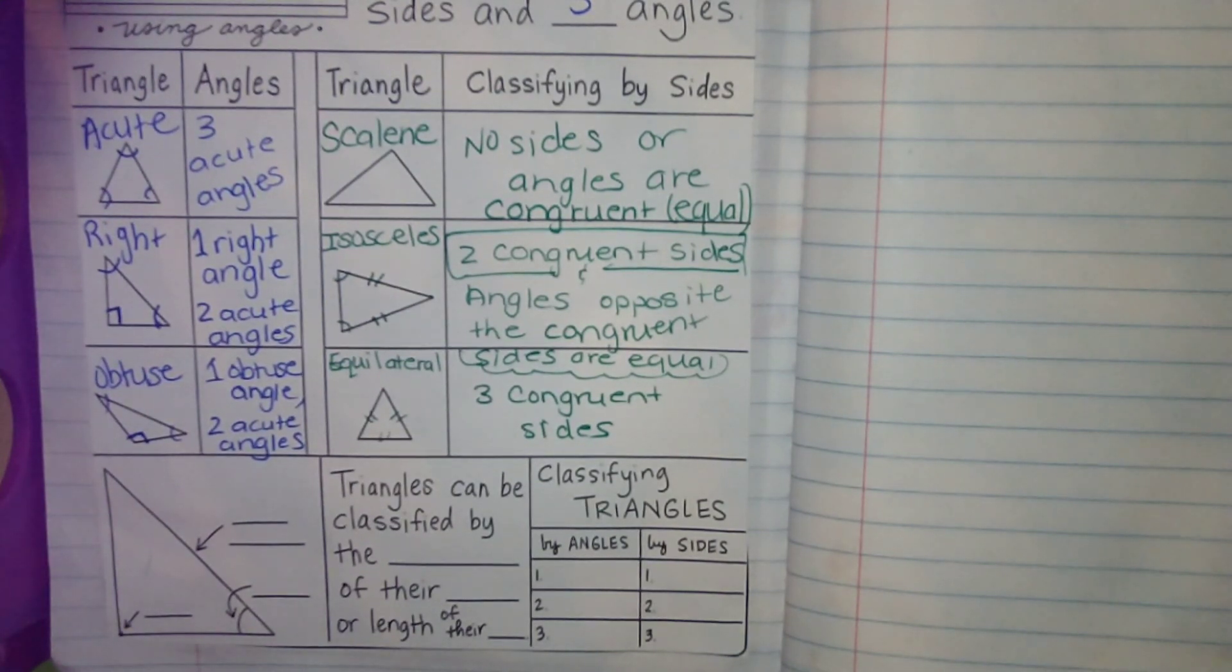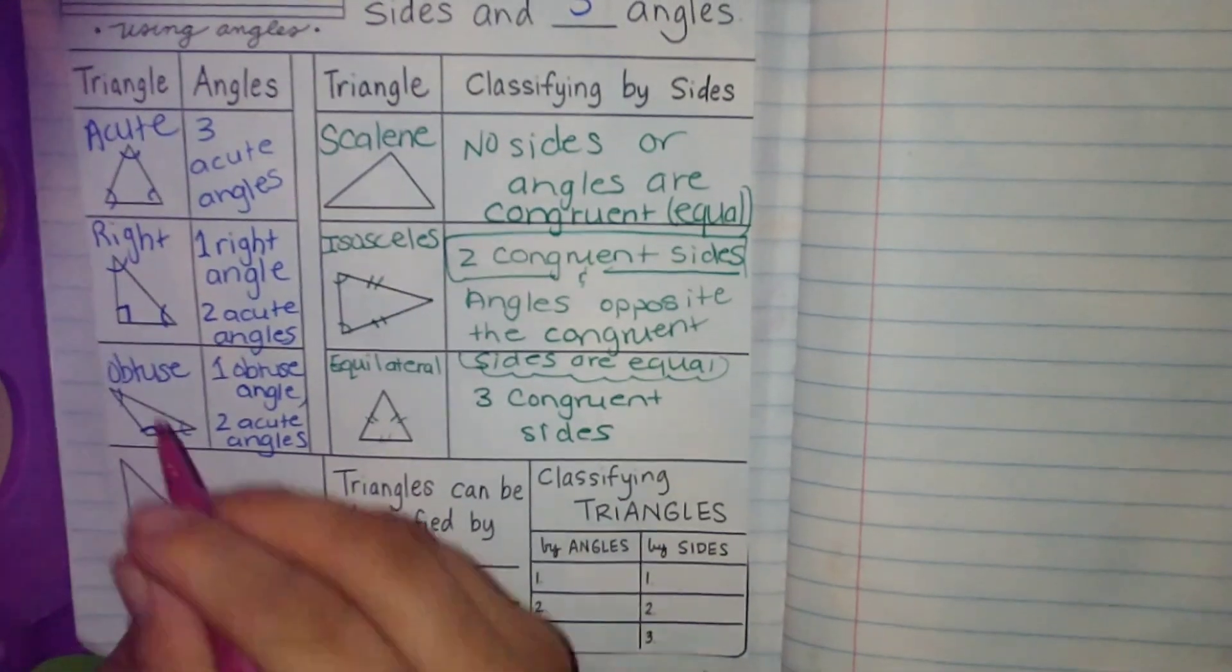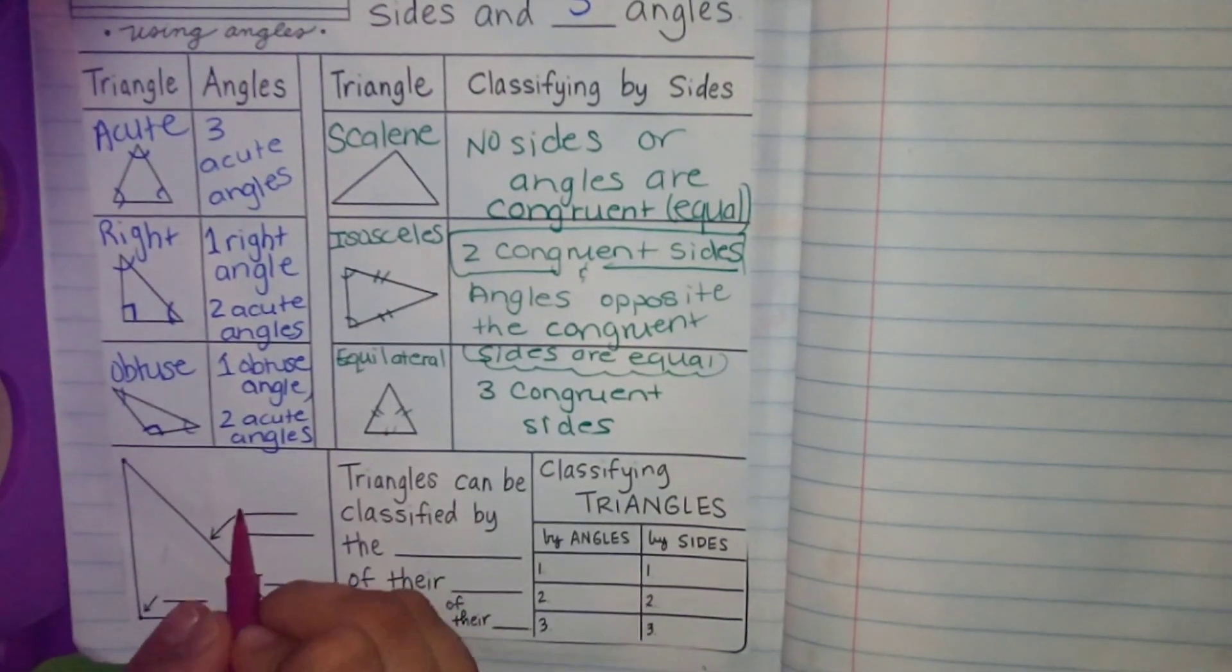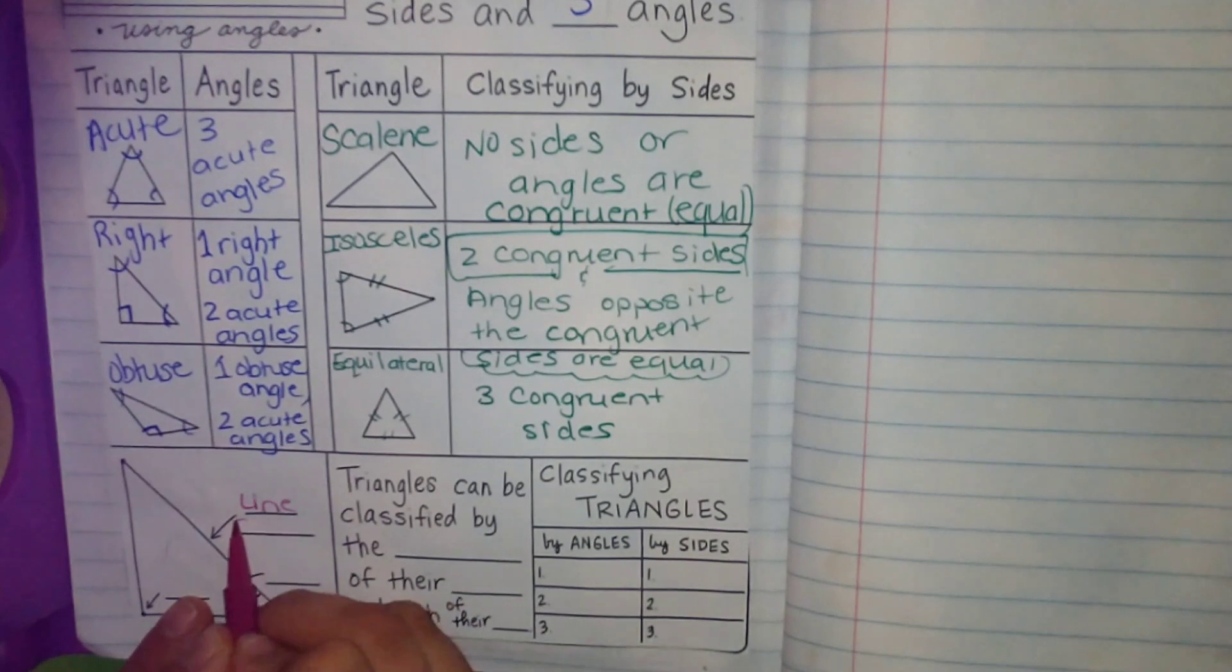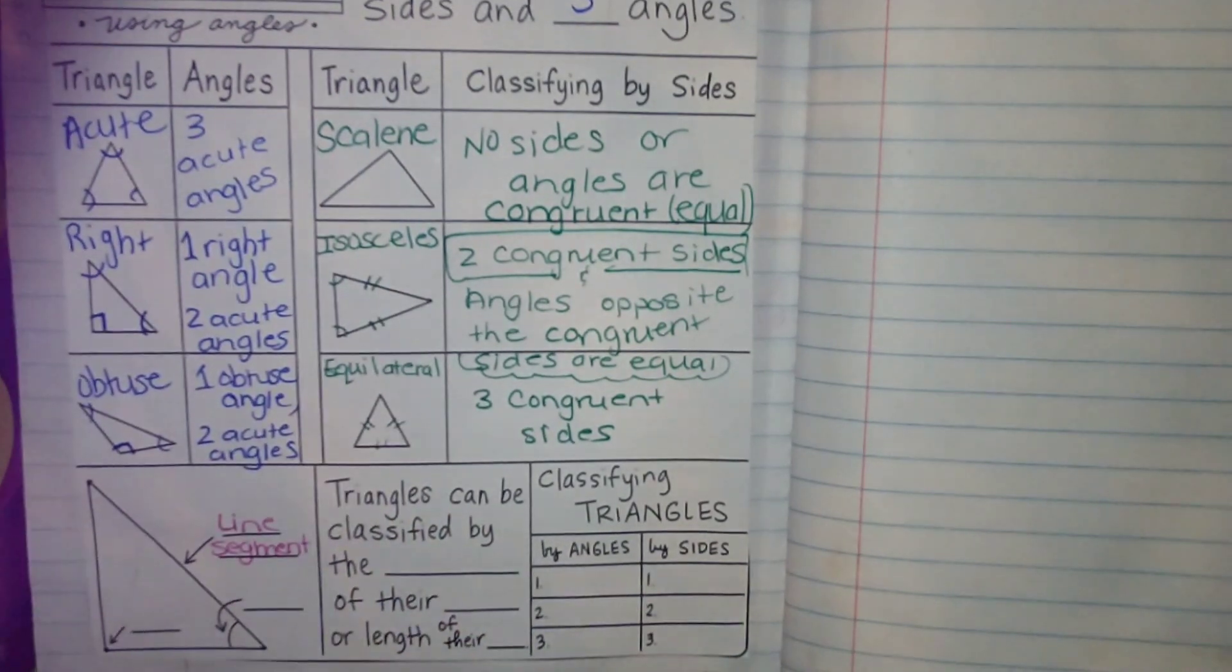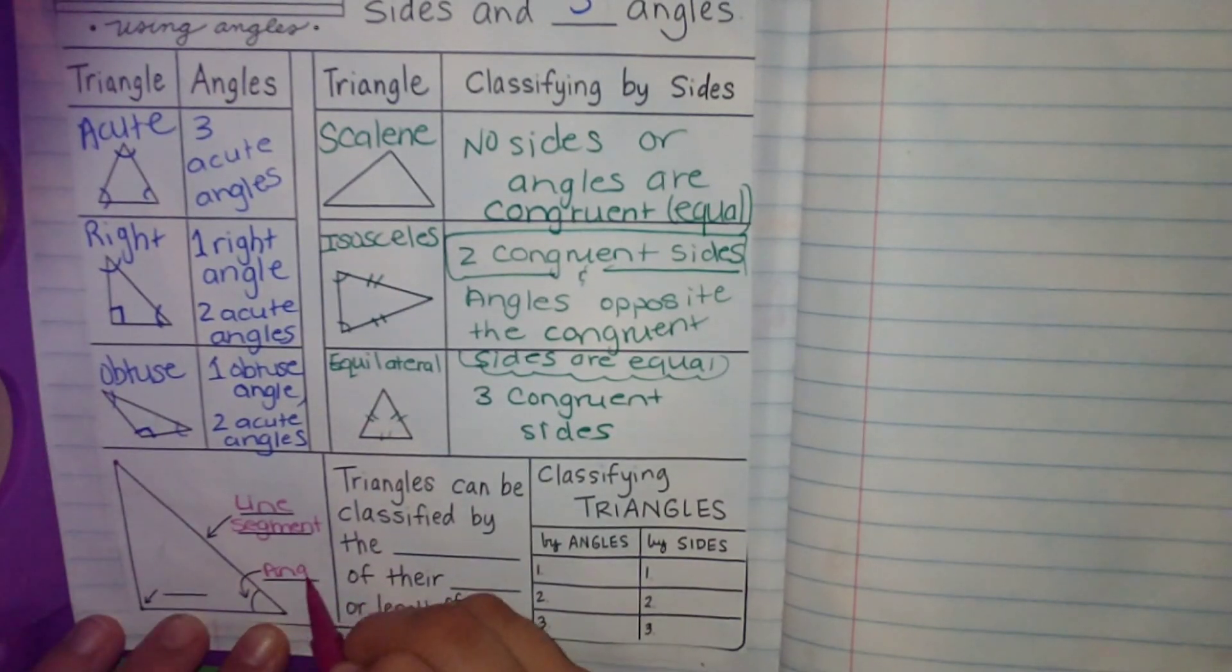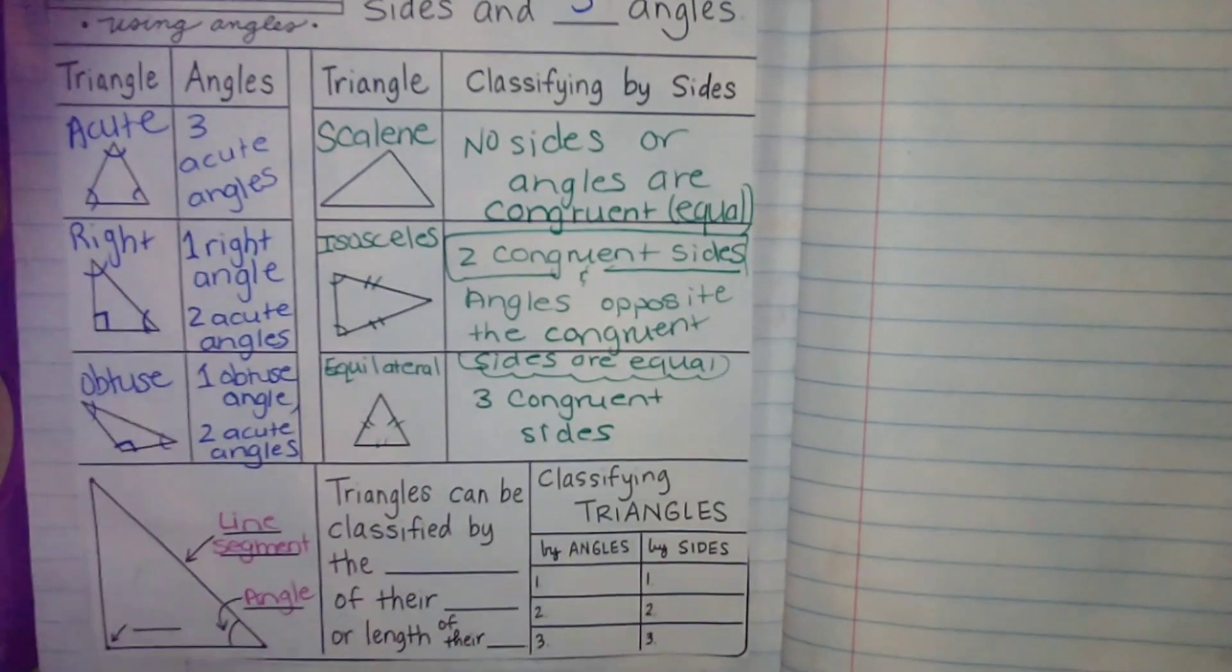So here is some review of our vocabulary. We talked about a line segment. A line segment is a line that has an end point and a beginning point. So a line segment are the sides of our shapes.